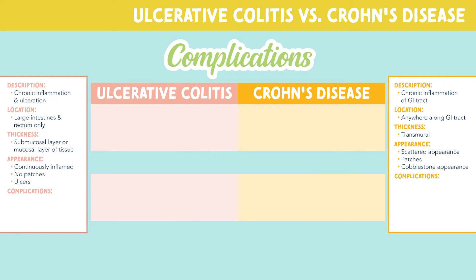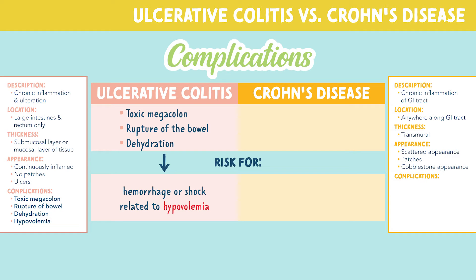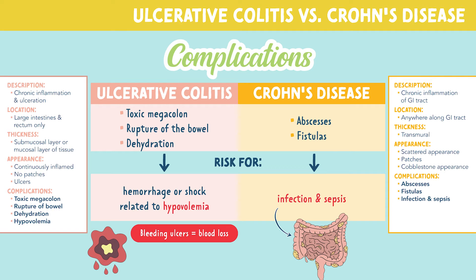Now let's look at the complications. Complications of ulcerative colitis include toxic megacolon, rupture of the bowel, and dehydration. Because of these things, patients with ulcerative colitis are at risk for hemorrhage or shock related to hypovolemia, or low fluid volume — remember, these patients experience bleeding ulcers which lead to blood loss. Patients with Crohn's disease are at risk for complications such as abscesses or fistulas, which put the patient at risk for infection and sepsis.